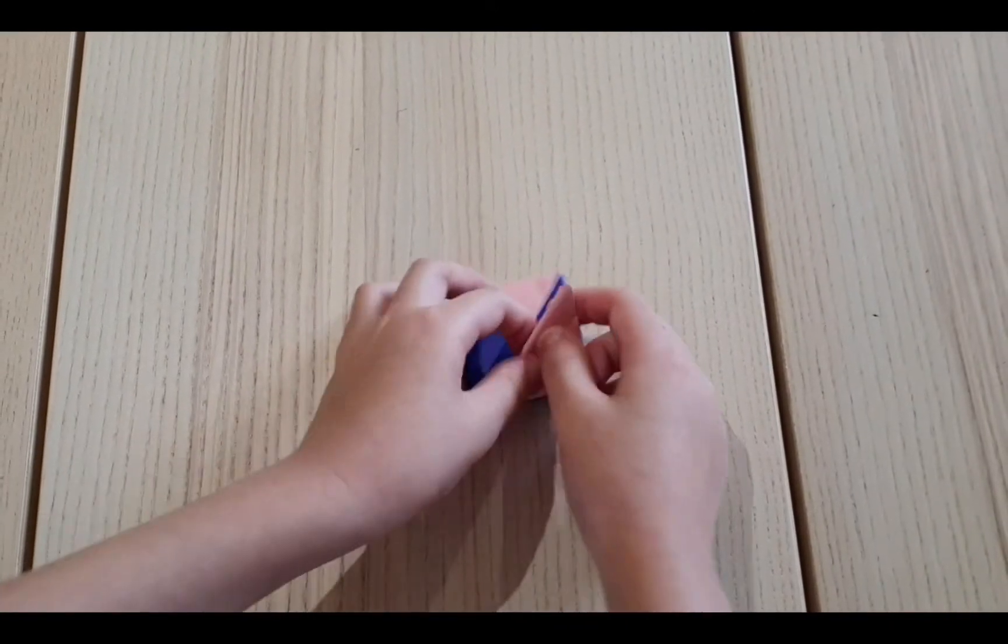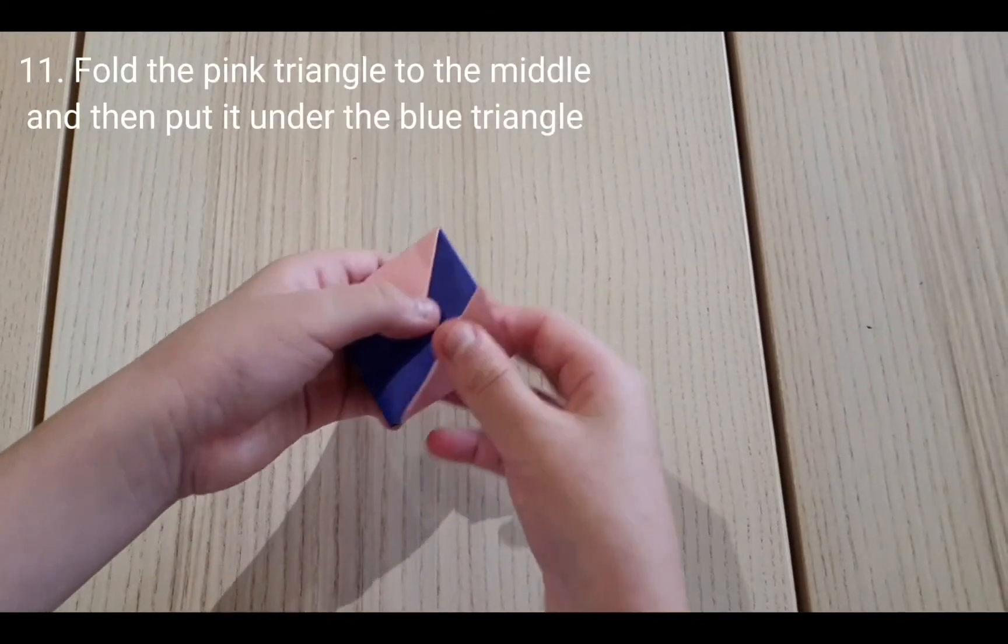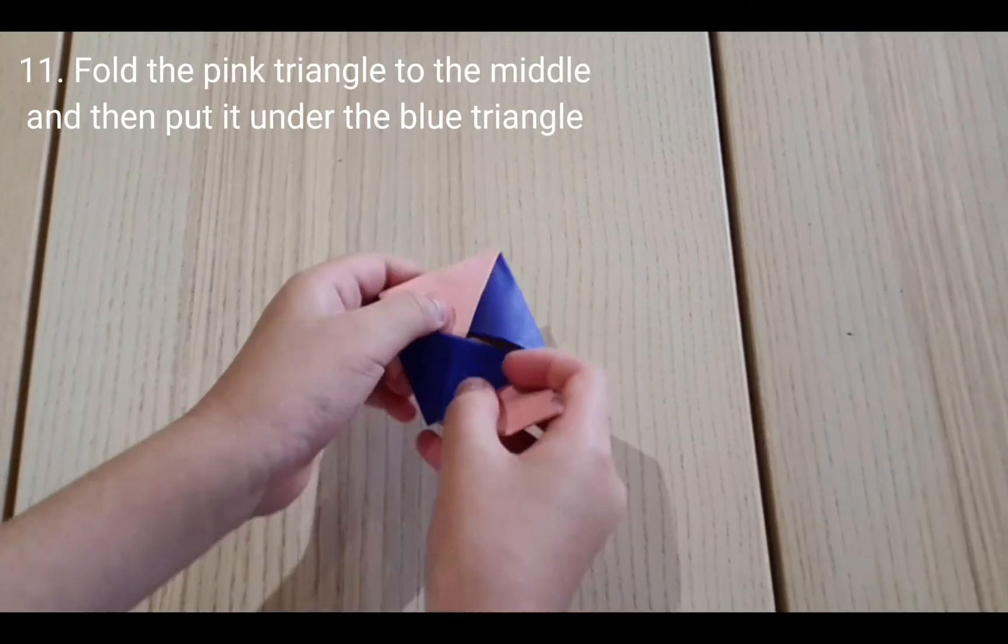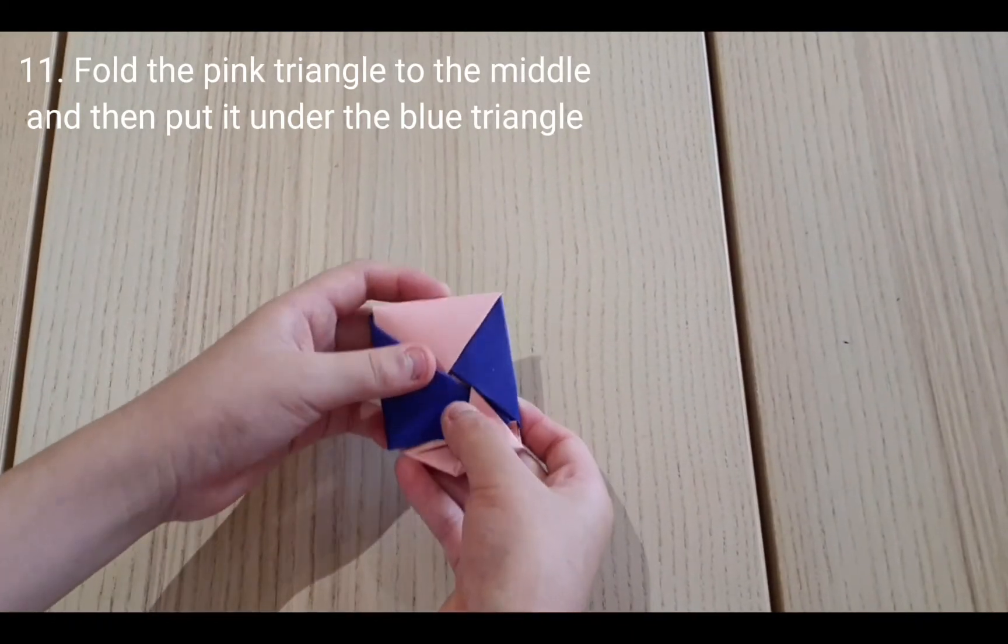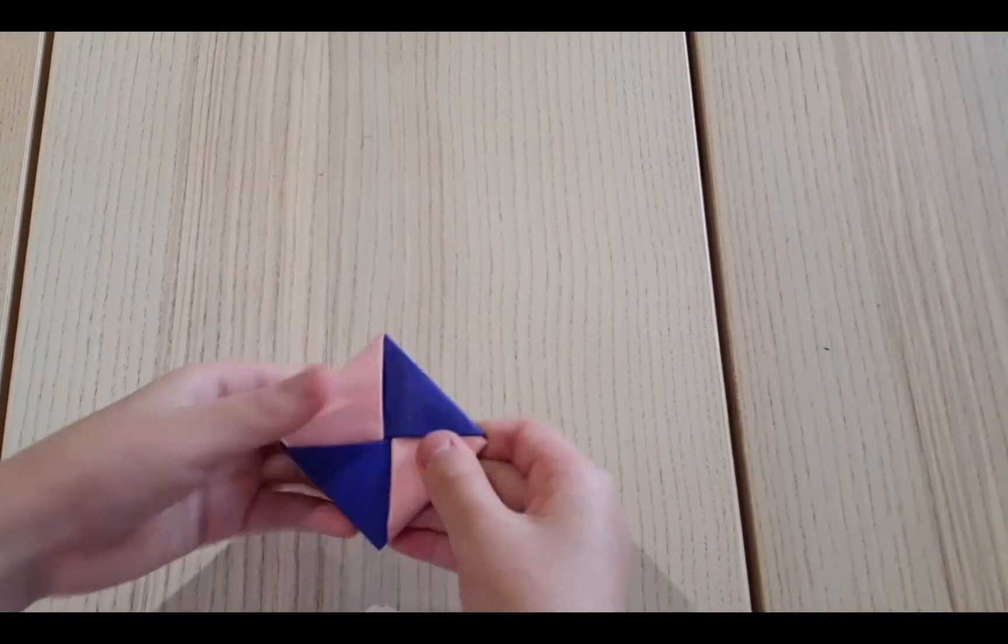Okay, next we need to fold the pink triangle to the middle, but put the pointy part below the blue triangle to make it this shape.